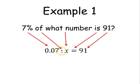So now we have 0.07 times x equals 91. And now we have an algebraic equation to solve. We have to solve for x. We want to find out what number.